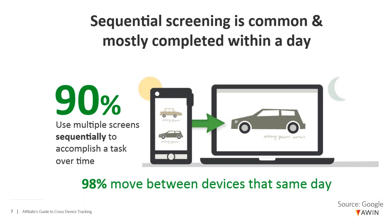It all happened so very quickly, it was vital that any solution involved in tracking this had to be very robust. And as you can see from these numbers, it really shows why it's important to be able to track across multiple devices.